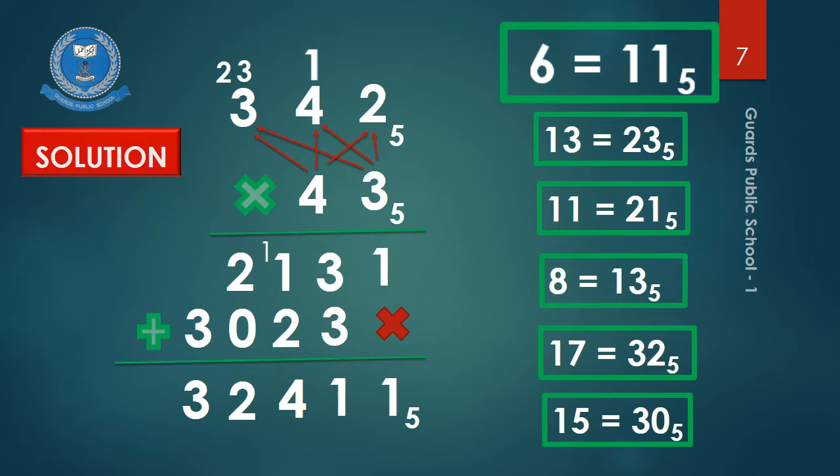Now adding the columns: 1 equals 1; 3 plus 3 equals 6, which is 1, 1 with base 5, so write 1 and carry 1; then 1 plus 1 plus 2 plus 2 equals 4 — and 4 is a valid base 5 digit so we write 4 as it is; 2 plus 0 is 2 and 3 as it is. Write down the base which is 5. Finally, the answer of multiplication is 3, 2, 3, 4, 4, 1, 1 with base 5.